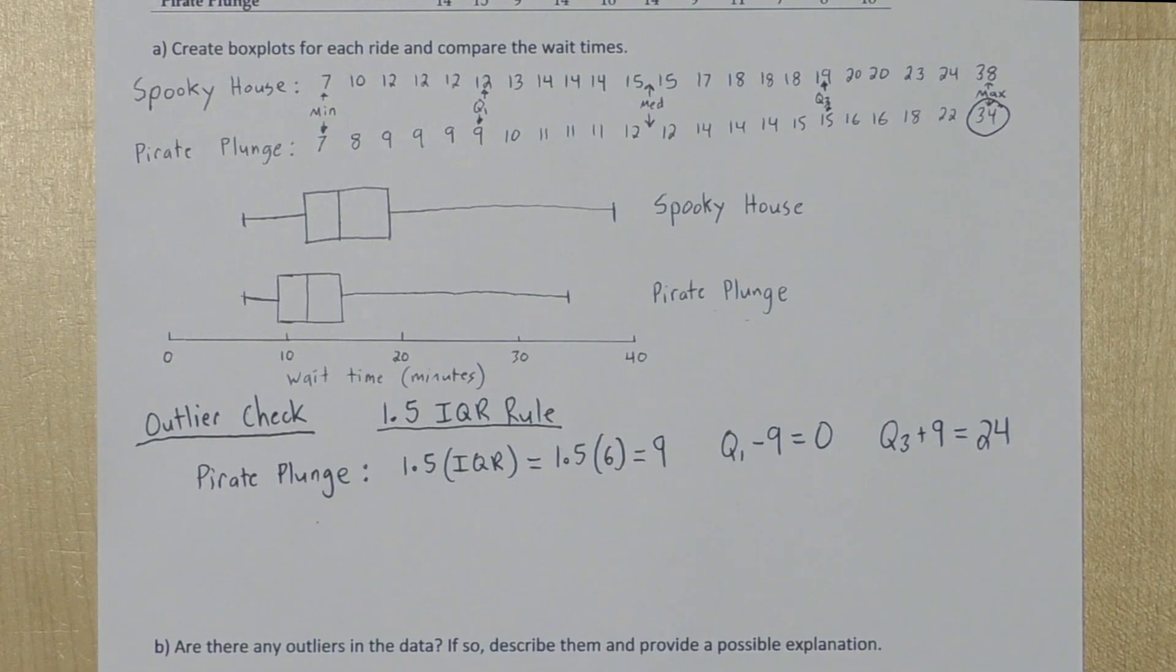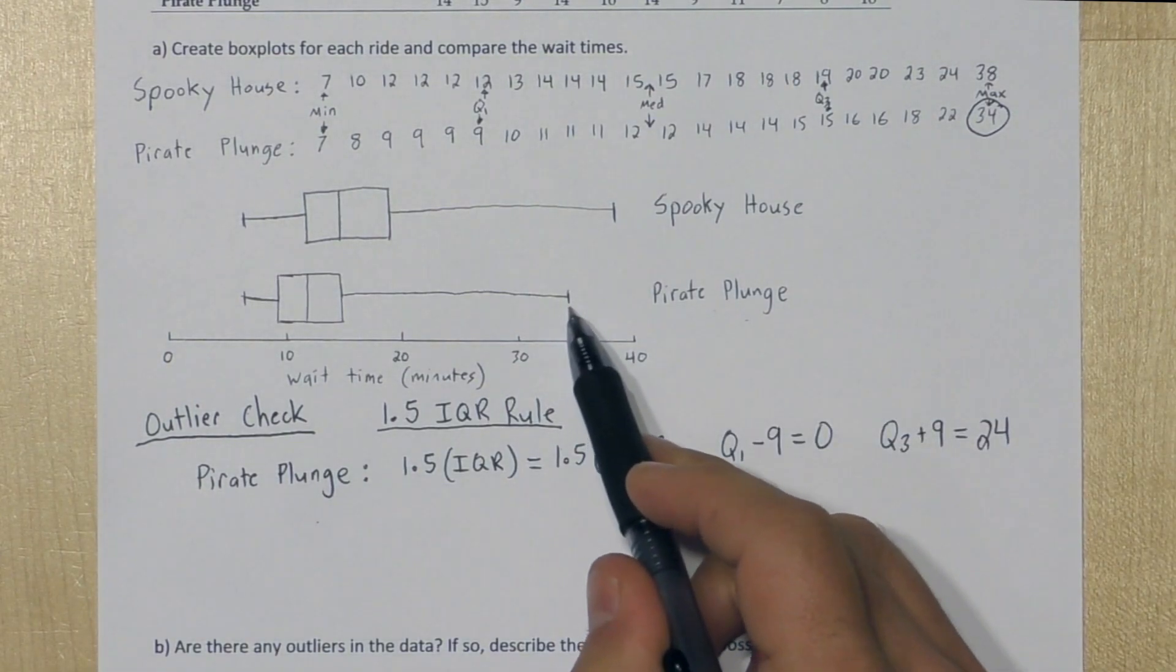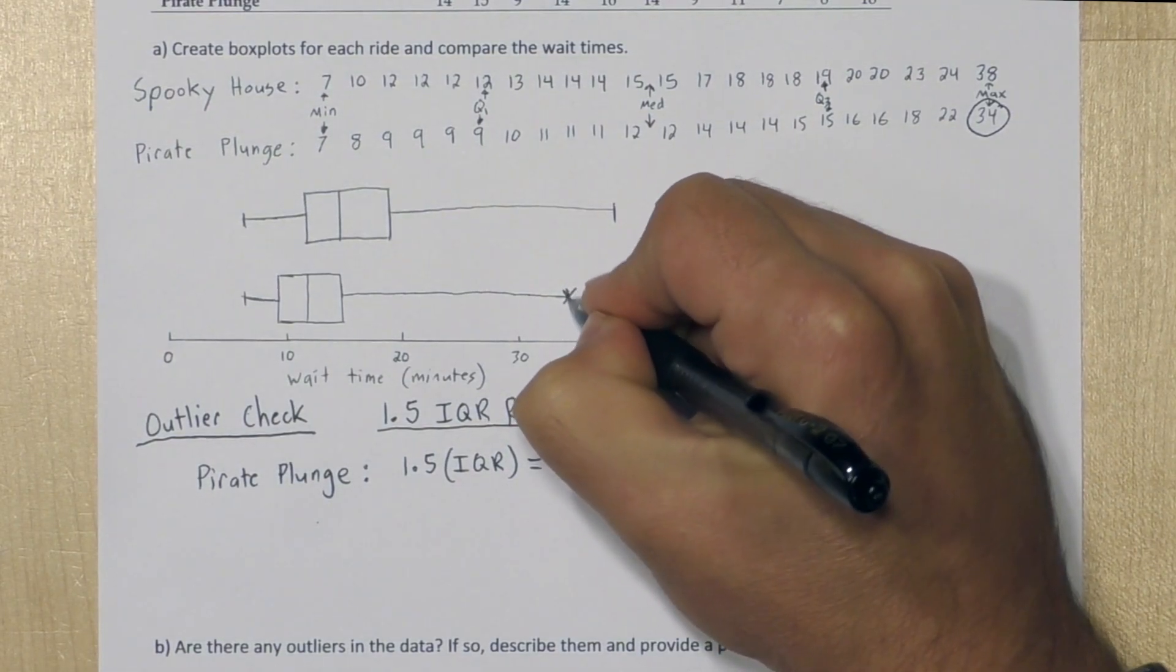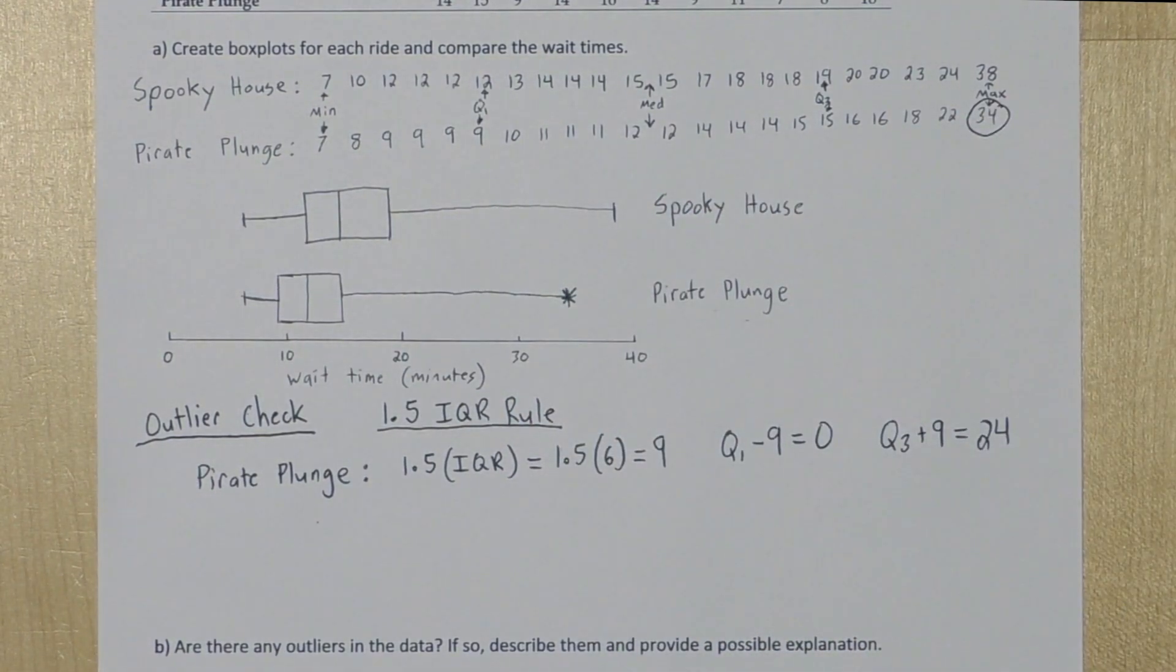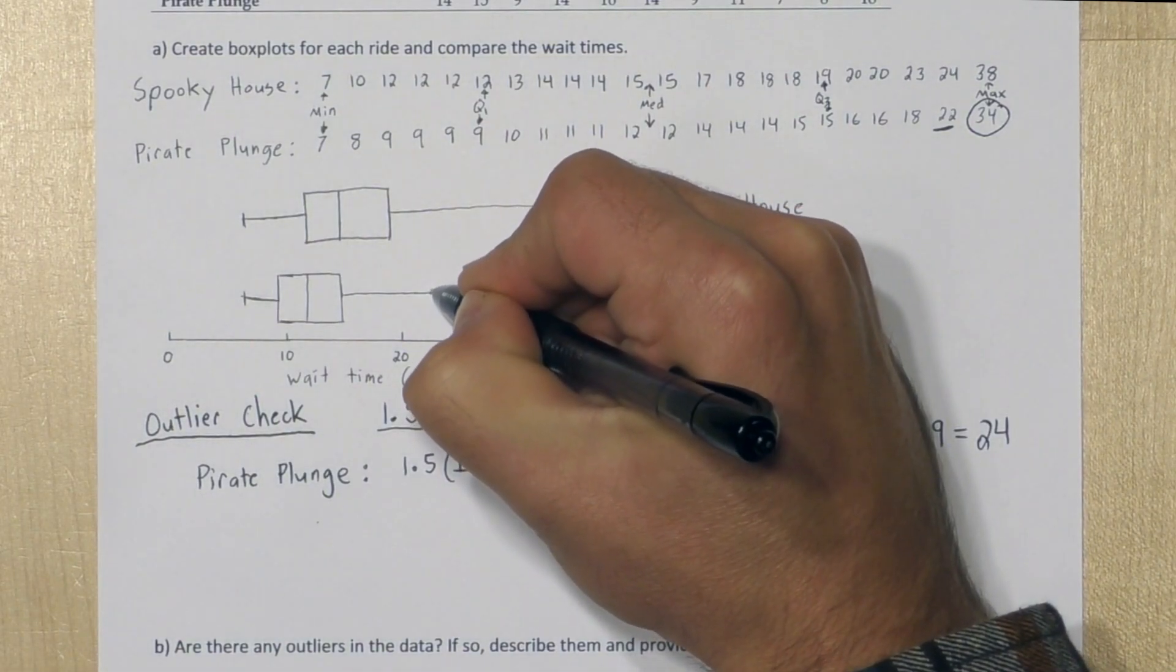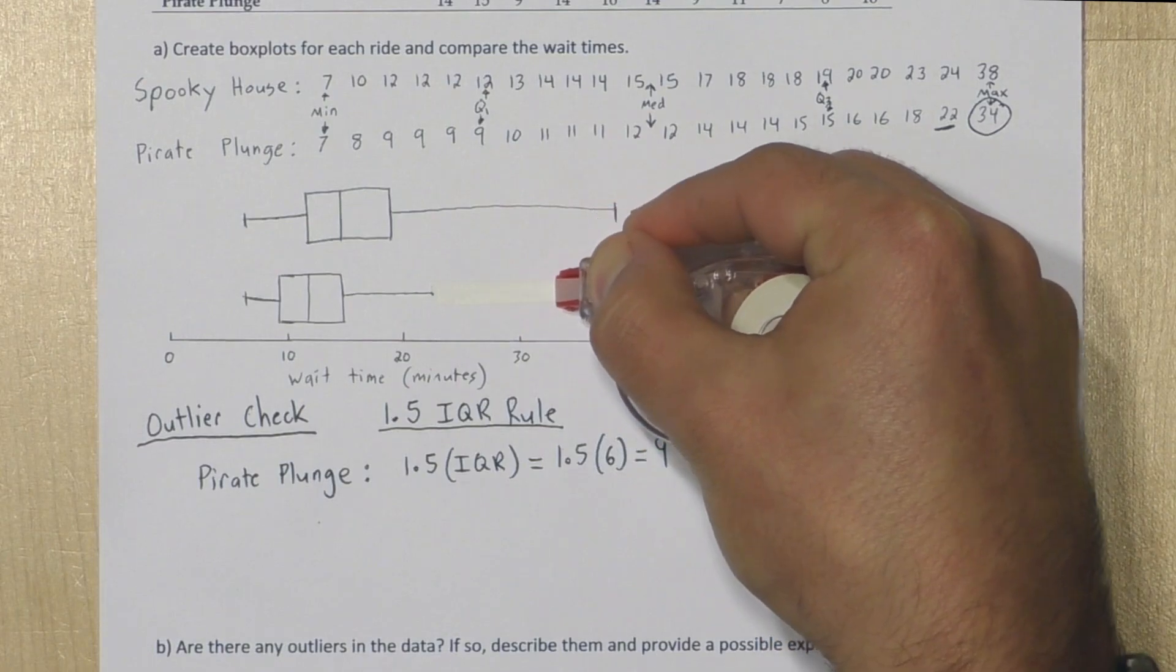So when we go back to our box plot, our 34 is actually represented by the end of this tail. We're going to replace that 34 with an asterisk, since it's an outlier. Now what we need to do is erase the whisker all the way down to our highest non-outlier value, which in this case appears to be 22. So we're going to erase the whisker all the way to about here. So this is further modifying the box plot.